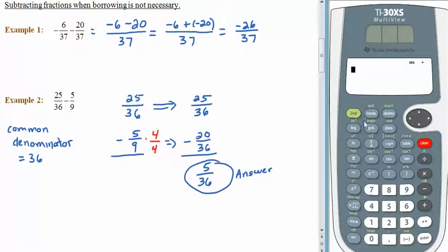Let's give this a try on our calculator. These are both proper fractions, so I'll use the fraction key. 25 over 36 and let's subtract the fraction 5 over 9. There we go, 5 36ths. When we don't have to borrow, it's really not that bad. Let's check out the case where we do have to borrow.